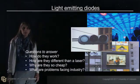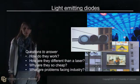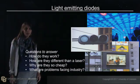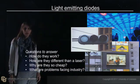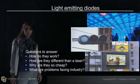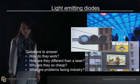The next topic is light emitting diodes. These are everywhere in our world. We'll answer key questions such as: how do they work? Why are they different than a laser? Why are they so cheap? And what are the problems facing industry? We'll also talk about the groundbreaking technology behind the 2014 Nobel Prize that Nakamura won for the blue light emitting diode.